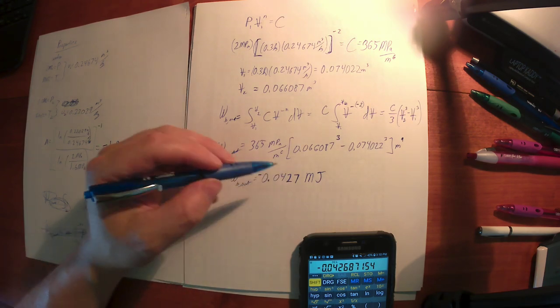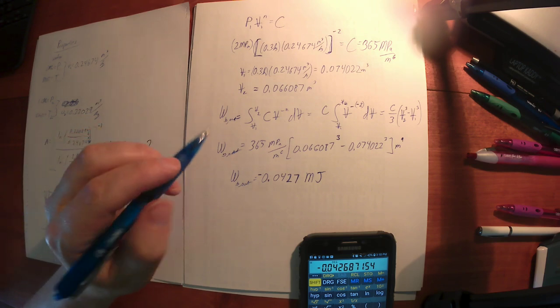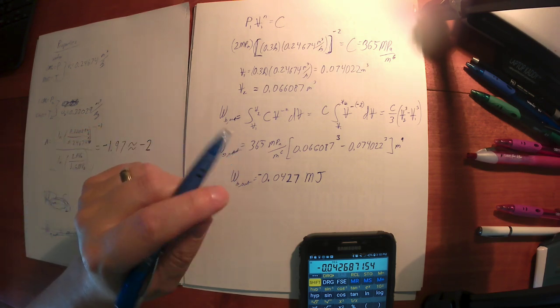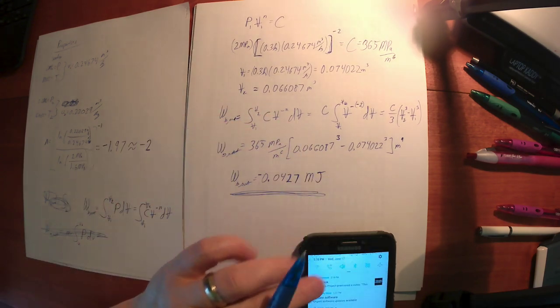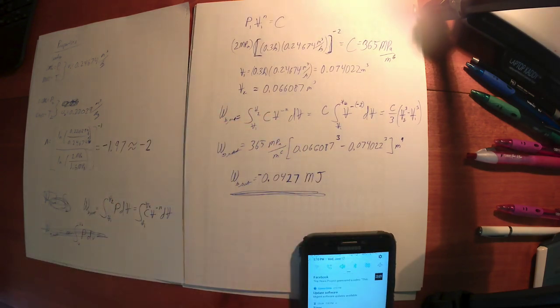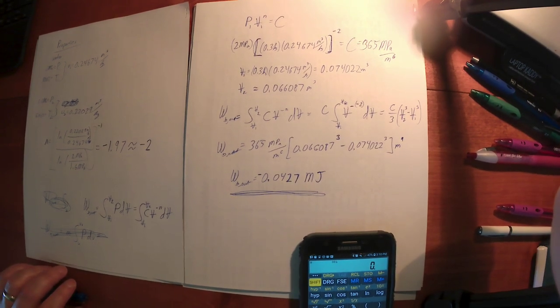All right. So about 42 kilojoules, or about 43 kilojoules give or take, or 0.0427 megajoules. All right. You know, I'm going to stop there. That's a nice example. It's a nice stopping place and we'll get a full 15 minutes for the next video. Be back in a bit.